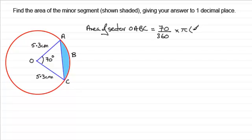The radius for this circle is 5.3, so we have π × 5.3². If you work this out on the calculator you'll get 17.159... cm².